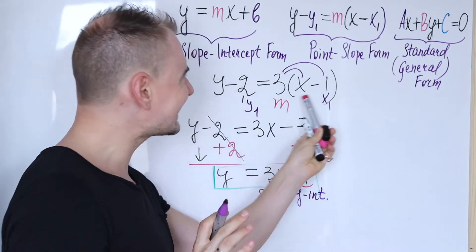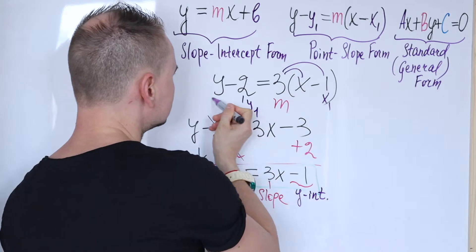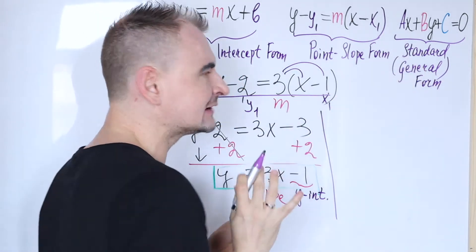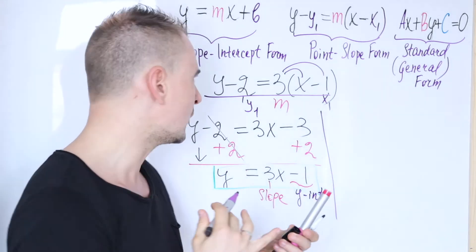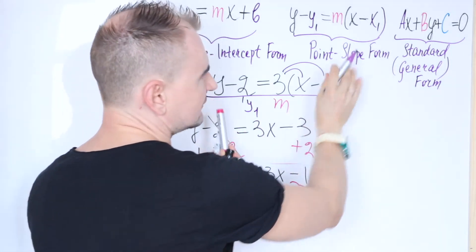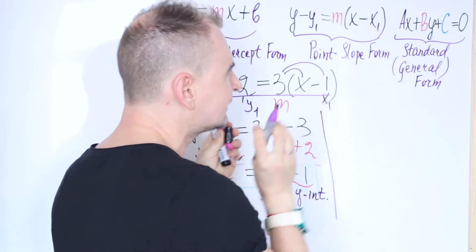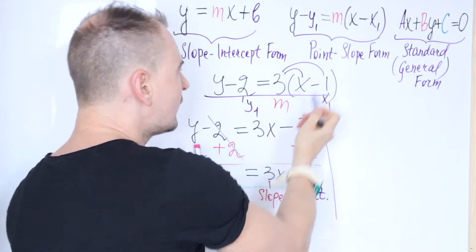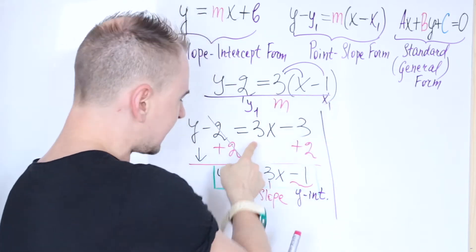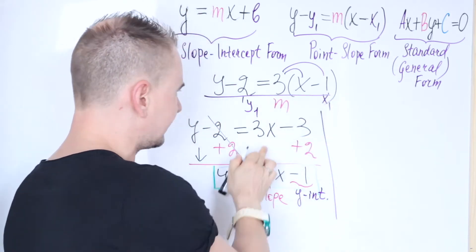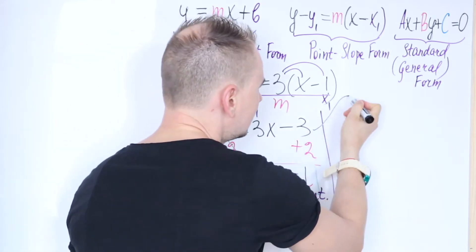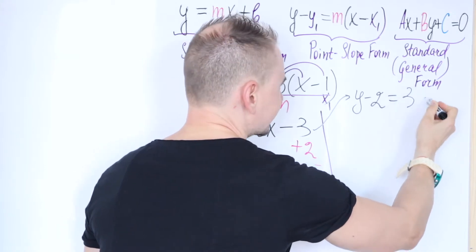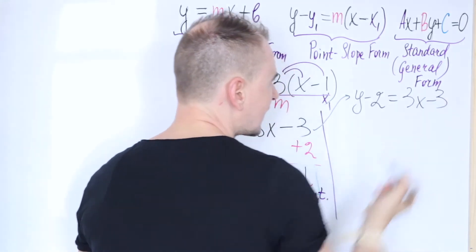Now, let's turn the same equation, this point-slope form, let's convert it into standard or general form. So again, at this point, look at the standard form. It does not have the brackets, any brackets in it. So remove the brackets first of all, basically like we did before. So I'm going to just rewrite this line over here. So y minus 2 equals 3x minus 3.